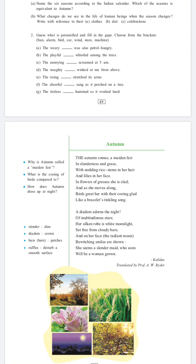Her silken robe is white moonlight set free from cloudy bars. Uska rishmi baag safed chandni hai baadal chhato se mukh set kare. And on her face the radiant moon bewitching smiles are shown. Aur uske chehre par eegdem bright chand jaisa muskurate hue dikhaya gaya hai. She seems a slender maid who soon will be a woman grown. Woha ek patli nokarani lagti hai joh jaldi badi hoi sthri hoogi.